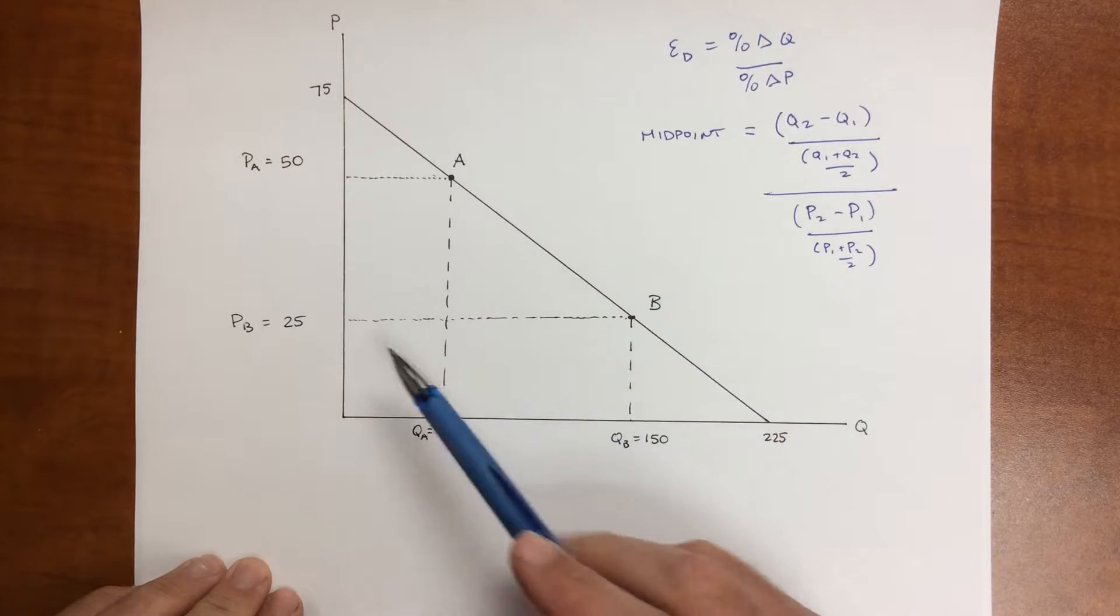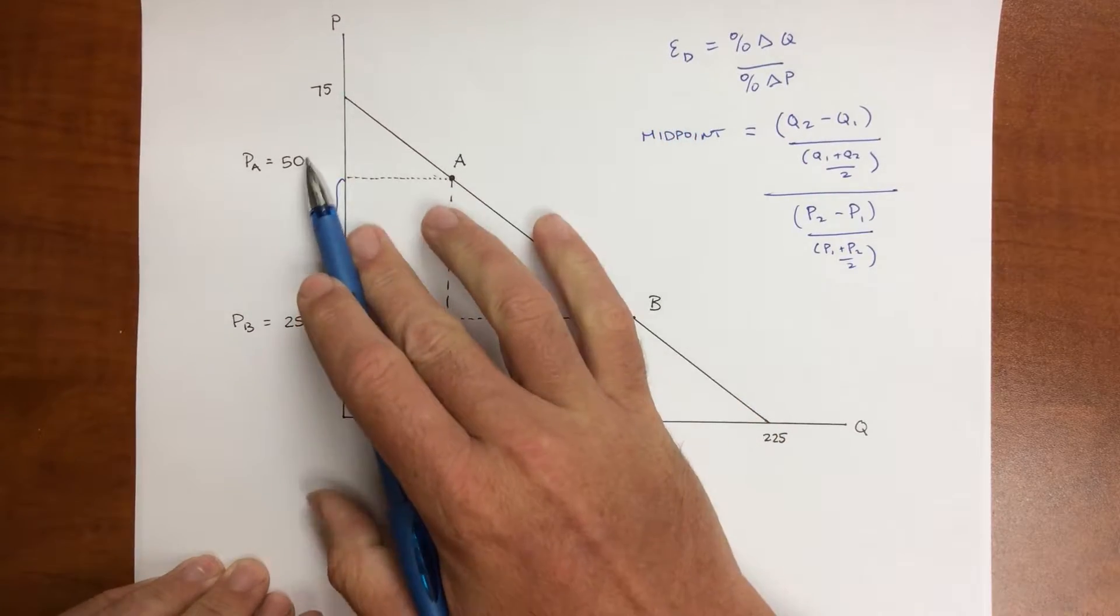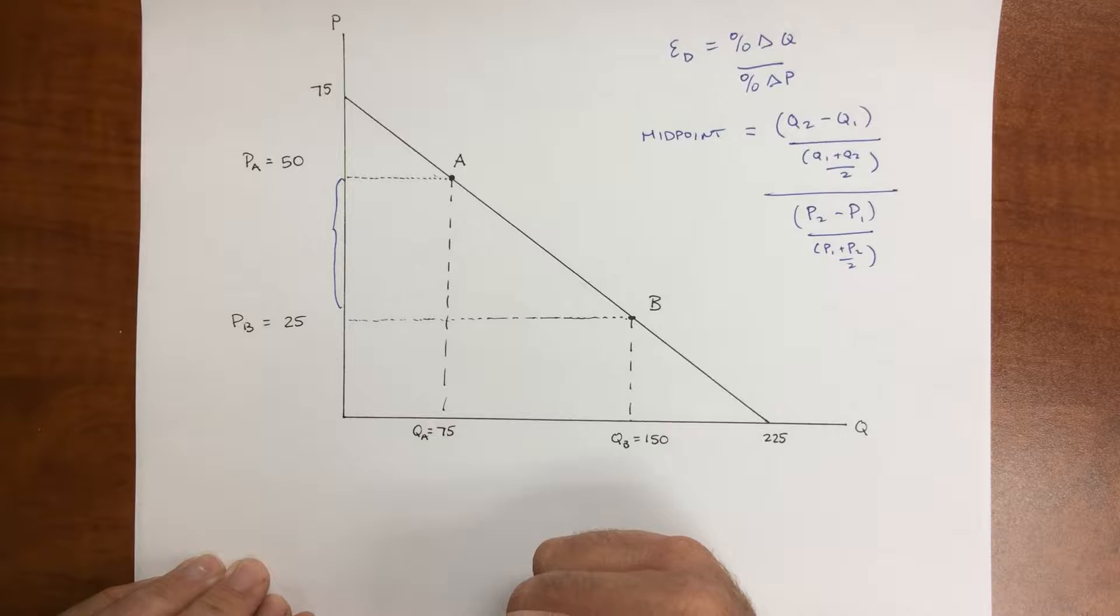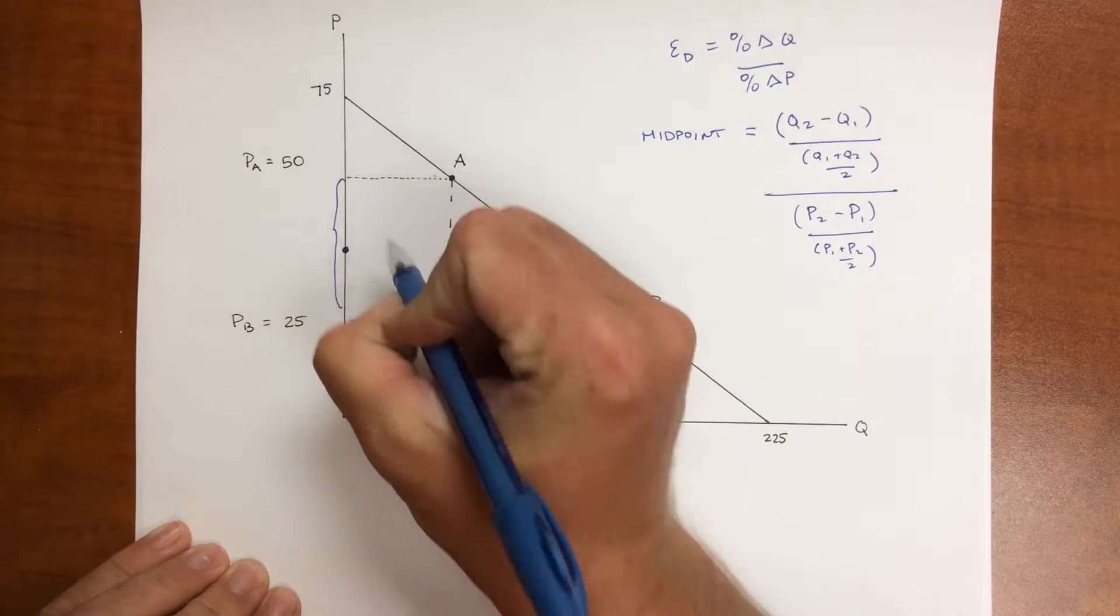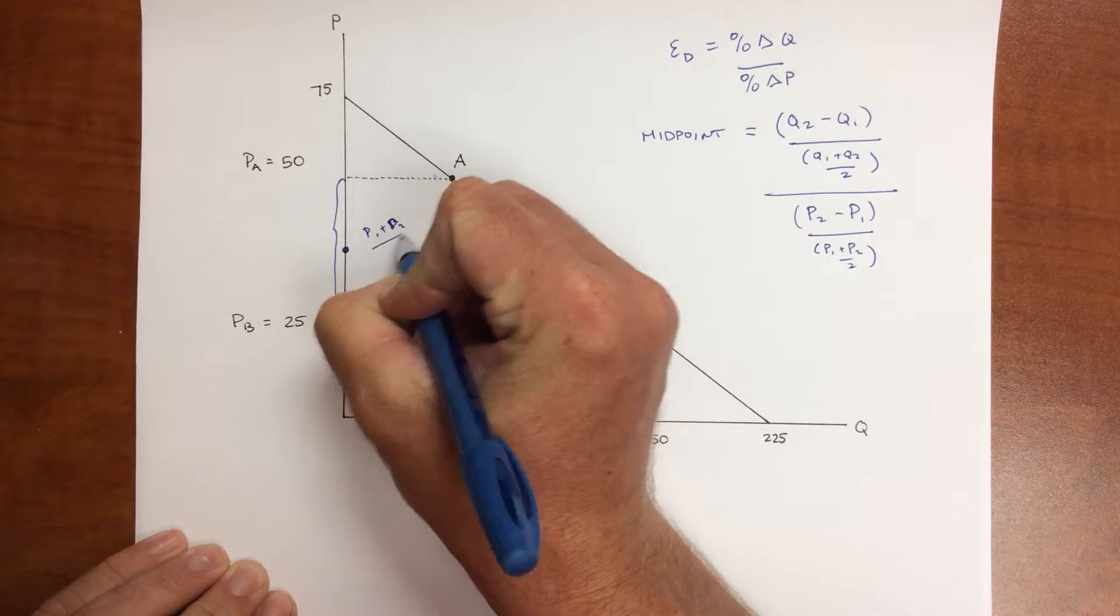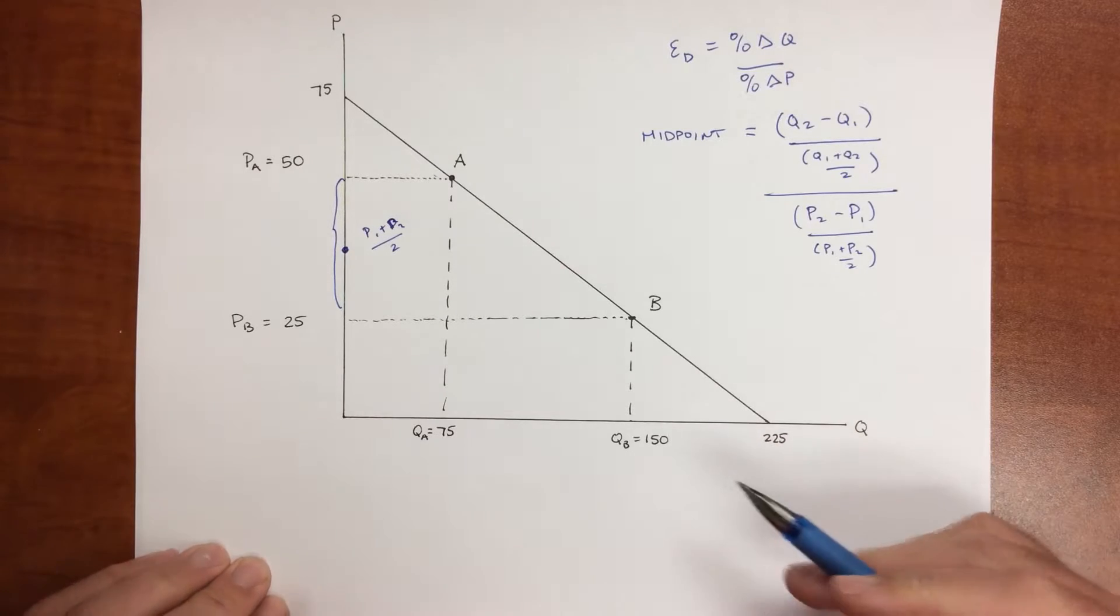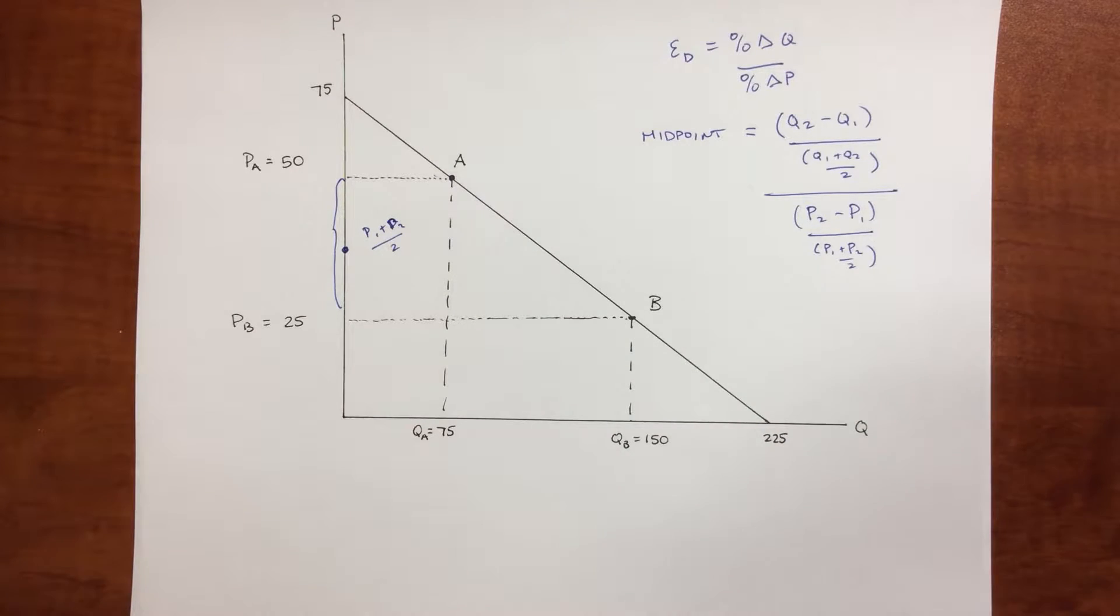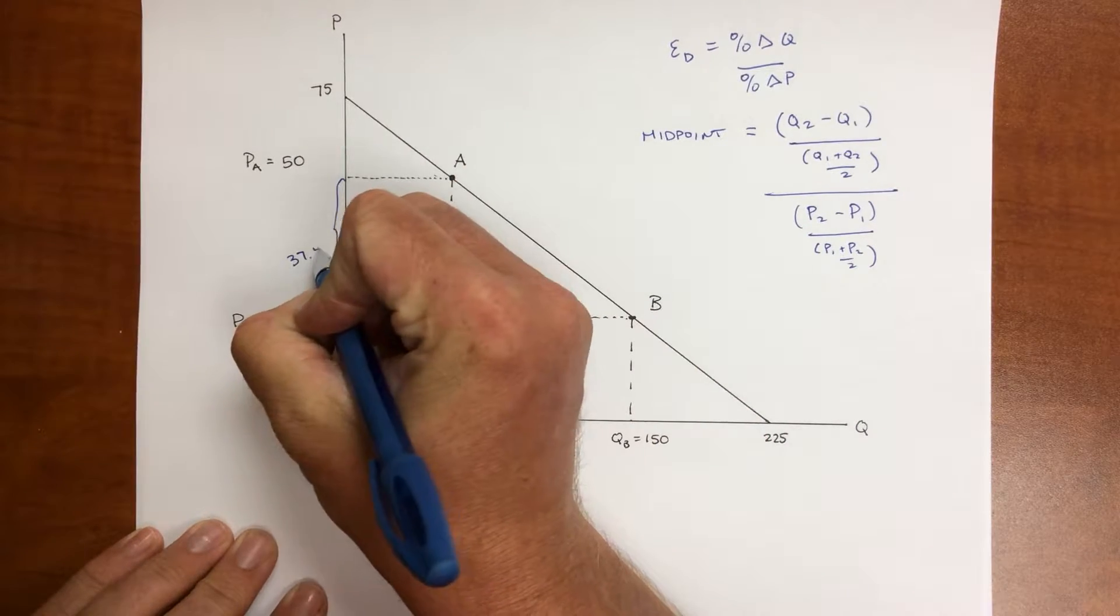So we want to calculate this. First thing we need to do is calculate the midpoint between PA and PB. So here we define the midpoint, this point right here in the middle, it's P1 plus P2 divided by 2. That's what this is right here. So I take 50, I add 25, so I get 75 divided by 2. The midpoint here is 37.5.